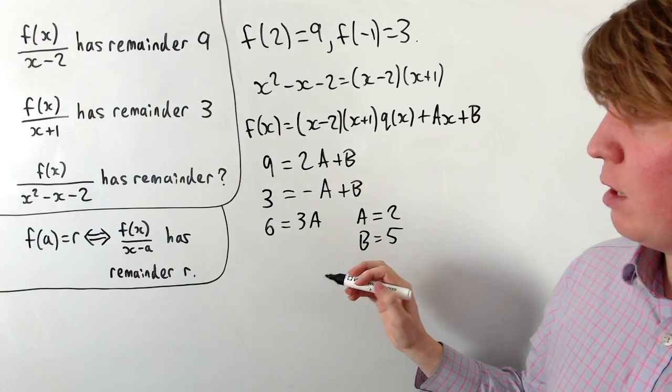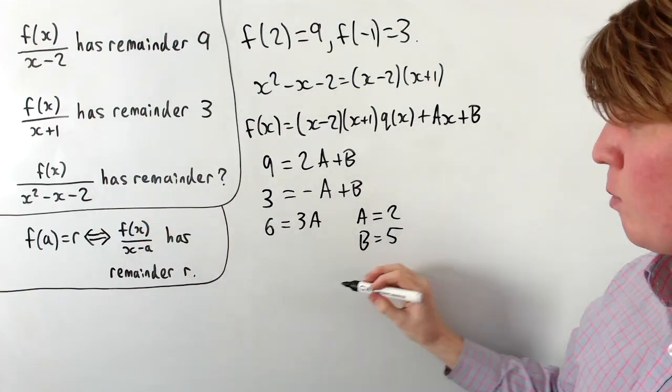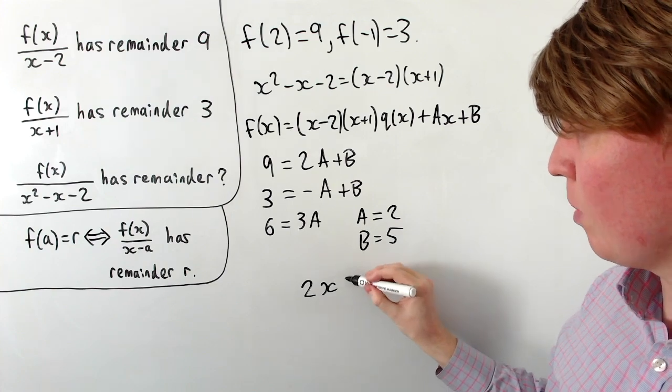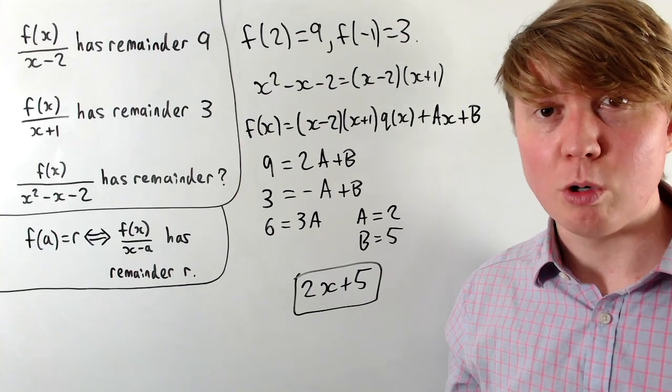So this is telling us then that the remainder, when we divide f(x) by this quadratic, remember this is ax plus b, the remainder is just going to be 2x plus 5 when we divide our polynomial f by this quadratic.